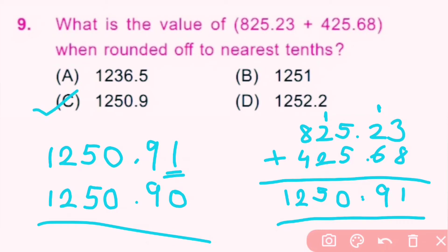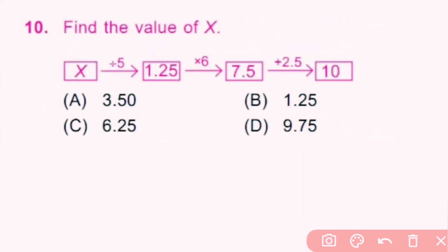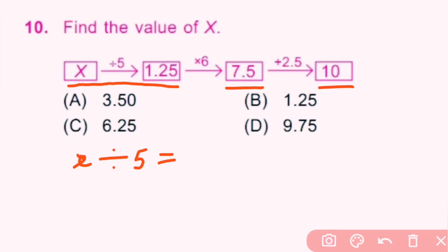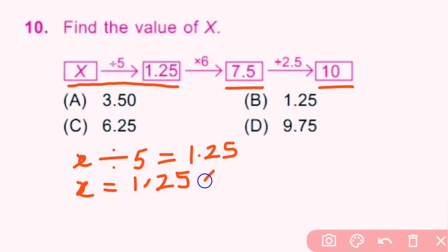Question number 10: Find the value of x, where x divided by 5 gives 1.25 into 6 gives 7.5 plus 2.5 gives 10. So x divided by 5 equals 1.25, meaning x equals 1.25 multiplied by 5. 1.25 into 5 equals 6.25. So x equals 6.25. C is the correct answer.